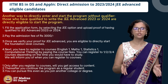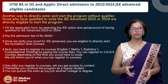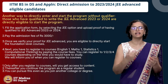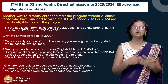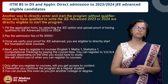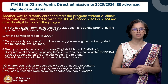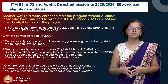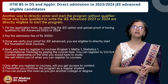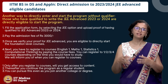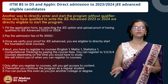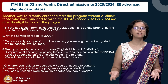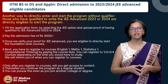There will be a registration window in which you can choose between one, two, three, or four of the first four basic courses — English 1, Maths 1, Stats 1, and Computational Thinking — and you can start the coursework by May 31st when the term starts. Only after you register for courses will you get access to the content, and thereafter you can start the program as a regular student. You can pursue this program even as you join another college or another degree, because it is now permitted to pursue two degrees at the same time.